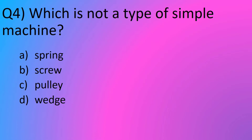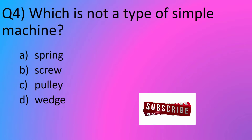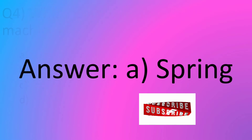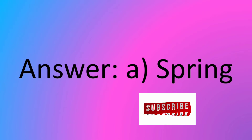Question number 4. Which is not a type of simple machine? Option A, spring. Option B, screw. Option C, pulley. Option D, wedge. The answer is option A, spring.